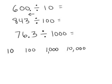I simply take the decimal to the left, the number of places that there are zeros in my power of ten. So I'm dividing by ten, one zero there, so I move the decimal one place. The answer is 60.